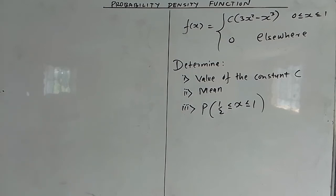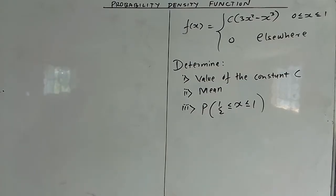In this next example, the random variable X is assumed to be a continuous random variable with probability density function f(x) = c(3x² - x³) for x between 0 and 1, and 0 elsewhere. We are told to determine the constant c, to determine the mean, and to determine the probability that x is between one-half and 1.